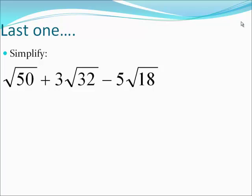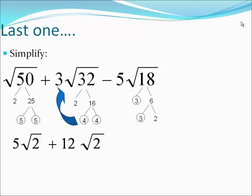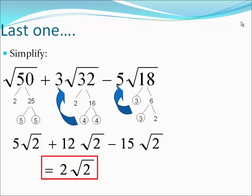Try this last one — pause the video until you're ready. √50 breaks down so that a group of fives comes out with two left over inside. 32 breaks down so that a group of fours comes out, multiplying by the three to make twelve, with two left inside. For 18, a group of threes comes out and multiplies by the five to make fifteen, with two left inside. Now add and subtract the like terms: five plus twelve is seventeen, minus fifteen is two — so two square roots of two is the final answer.